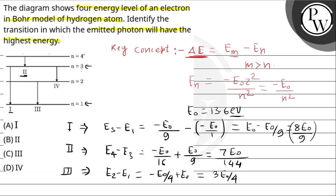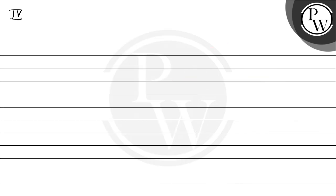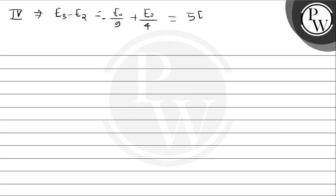For transition 4, which goes from 3 to 2: E3 minus E2 equals E-naught over 9 minus E-naught over 4, which equals 5E-naught over 36.